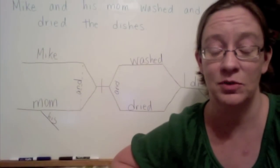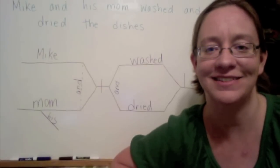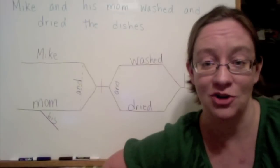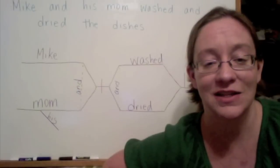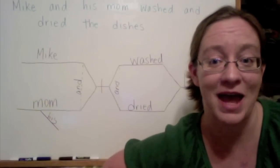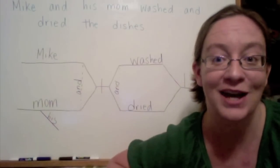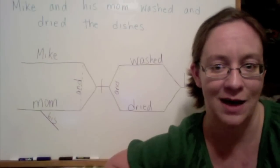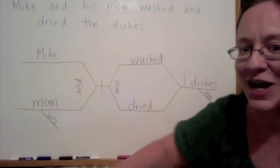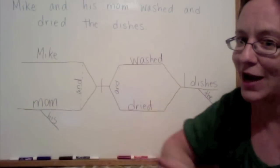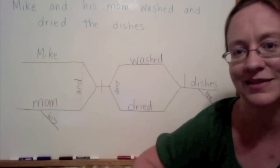You might be asking yourself, is it possible to have a compound subject and a compound predicate in the same sentence? Yes, it is. In this sentence, 'Mike and his mom washed and dried the dishes,' the sentence has both a compound subject and a compound predicate. Mike and his mom are both performing the same actions of the sentence — there are two actions, but they are both performing both actions. So this sentence has a compound subject, Mike and his mom, and the two verbs, washed and dried, make a compound predicate. Both are sharing the same subject and same predicate.